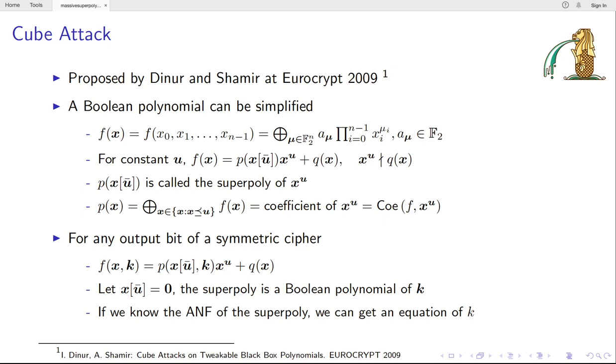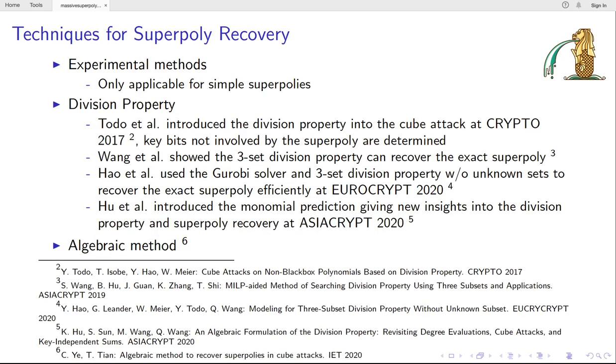If we can recover the ANF of the Super-Poly, then we can get one equation of k and some key information may be extracted. In the very early stage, the Super-Poly can be recovered by experimental method only. Only simple possible polys can be recovered in this way.